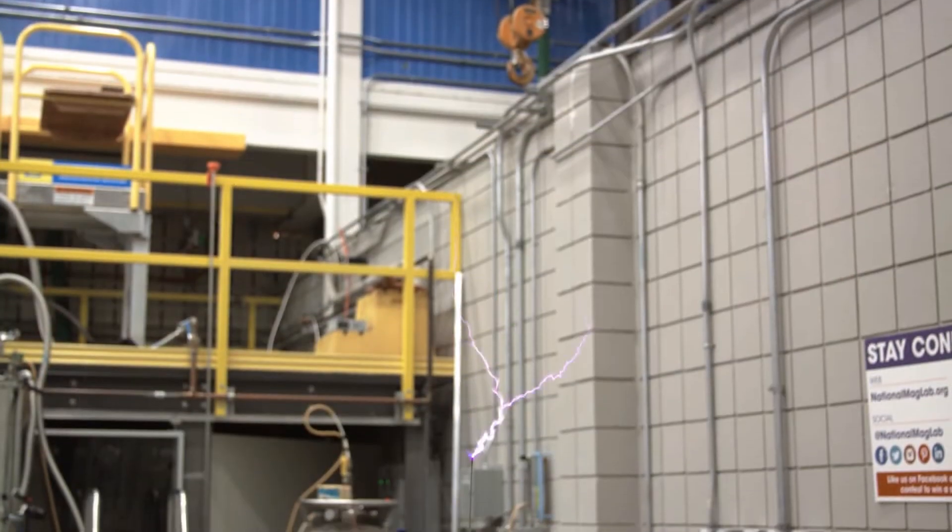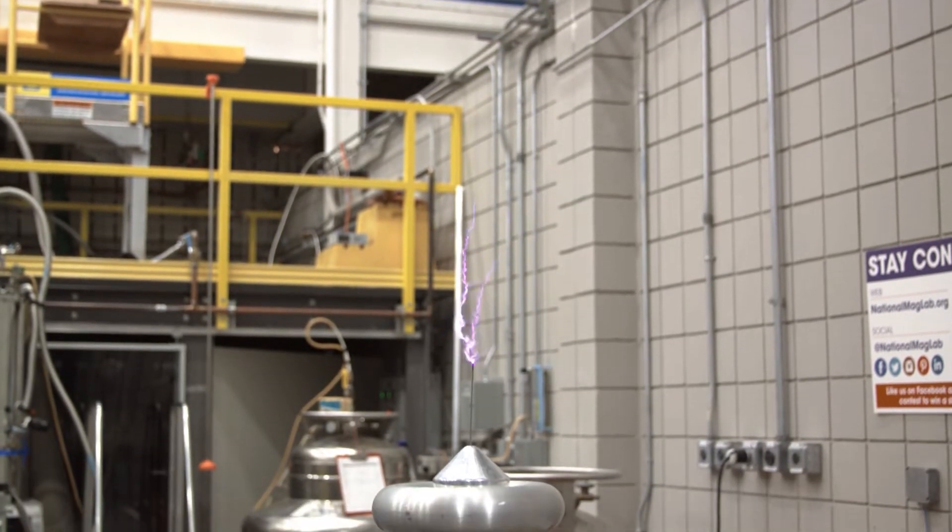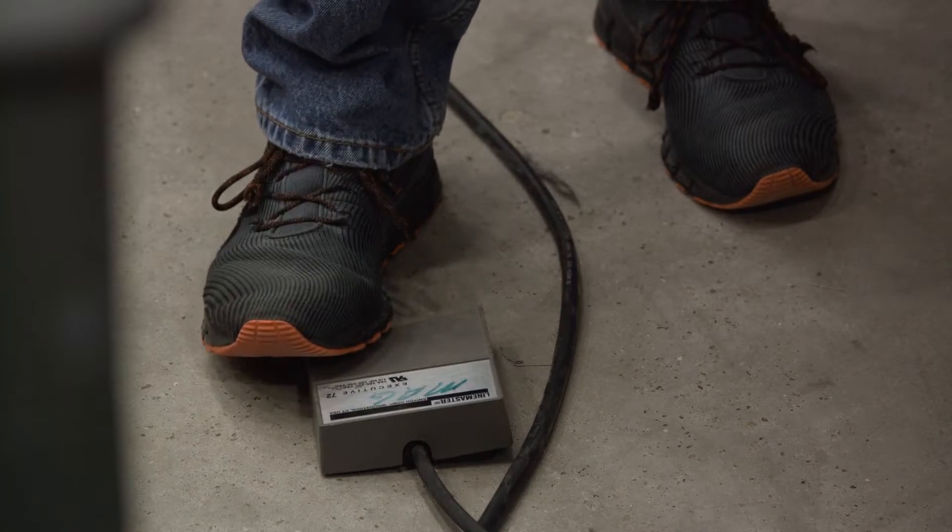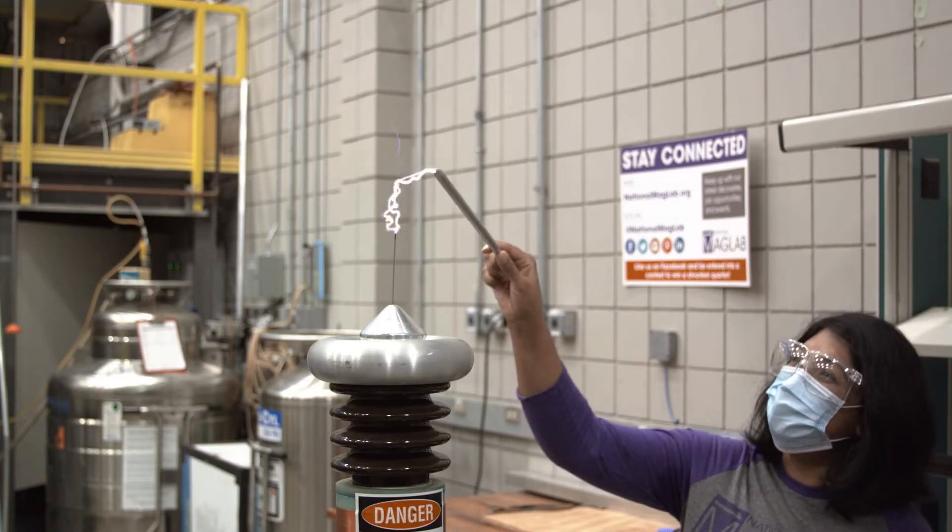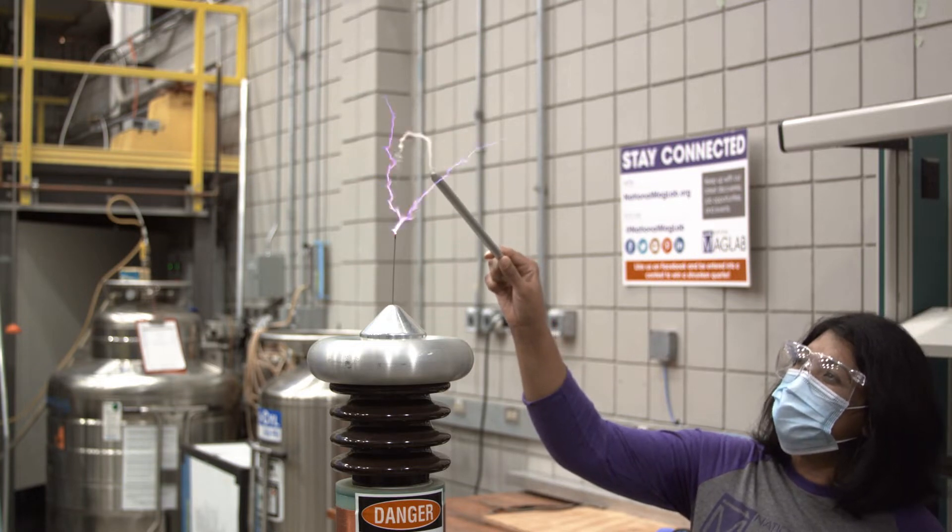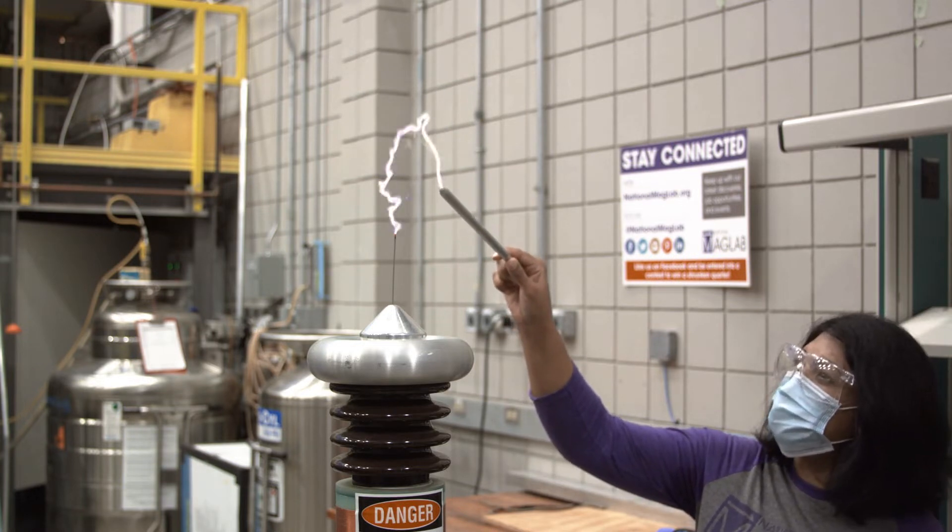The big ring at the top of the secondary coil is called a toroid. It forms one terminal while the ground serves as the other terminal. That's where those 250,000 volts go, creating an electrical field so powerful it ionizes and lights up the air.